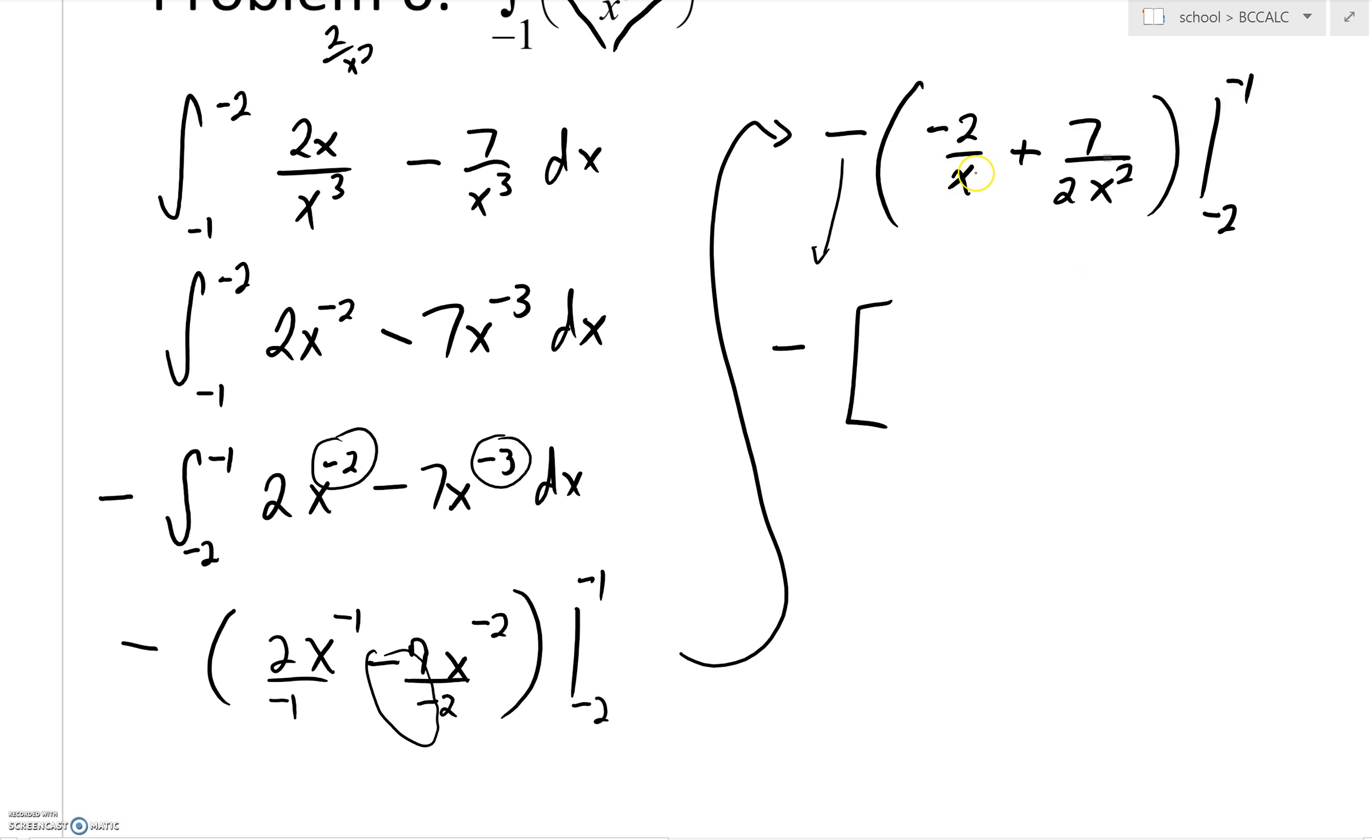So let's keep this minus out in front. And first, go ahead and plug in negative 1. So I'm going to have negative 2 all over negative 1 plus a 7 all over 2 times negative 1 squared.